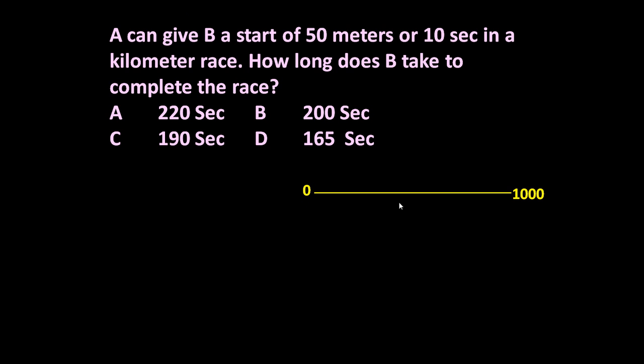Suppose the racing track is from 0 to 1000. A can give B a start of 50 meters means if B starts running just 50 meters ahead of A, they will finish the race at the same time.